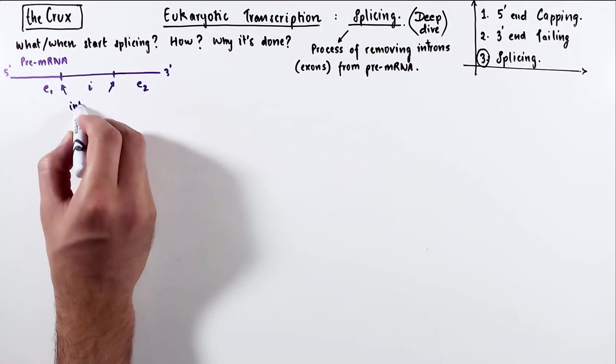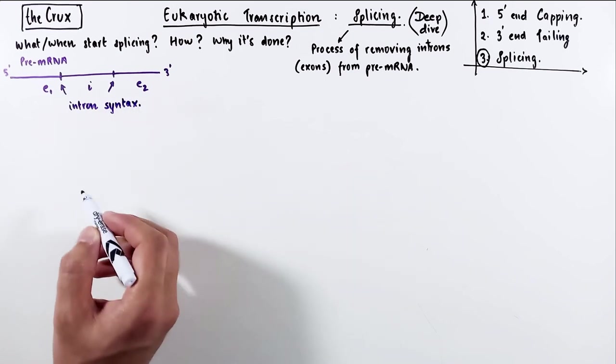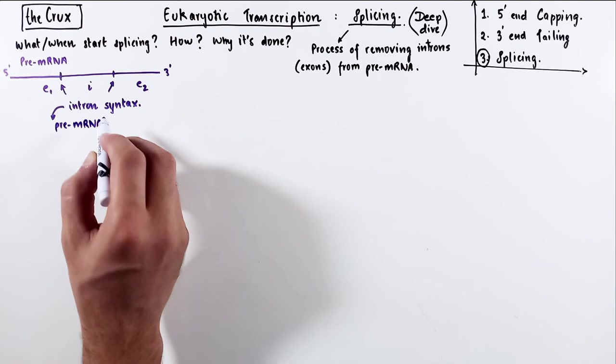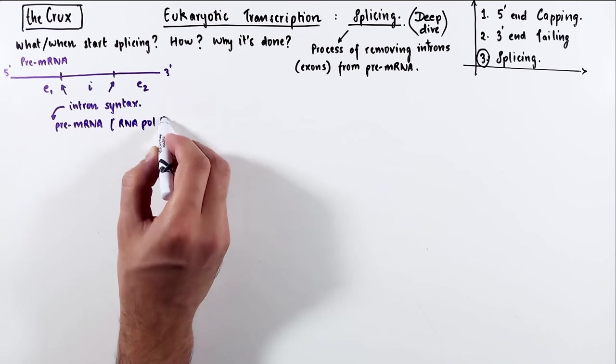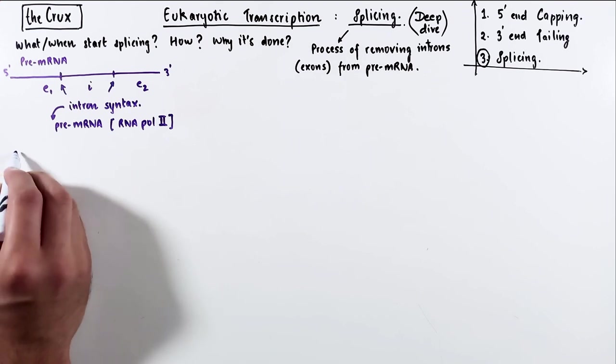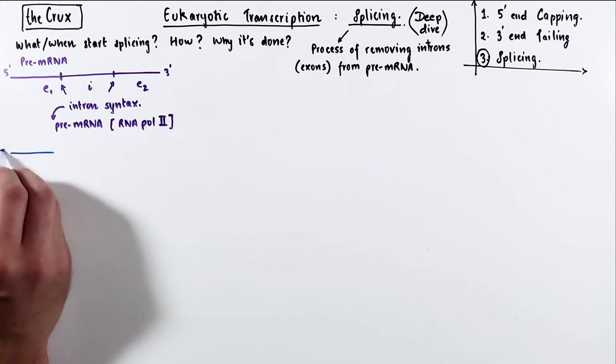Now, introns in pre-mRNA have a syntax, which tends to be very specific. In this specific video, I'm only going to talk about the introns of the pre-mRNA, so majority of the transcripts made by the RNA polymerase II. What do I mean by syntax? Let's take a closer look.